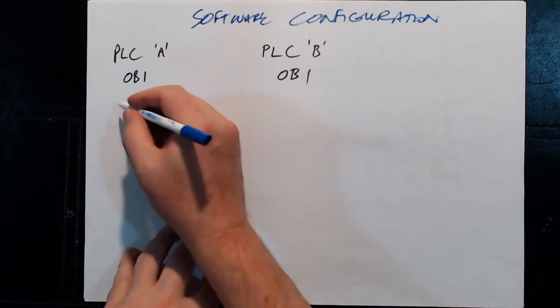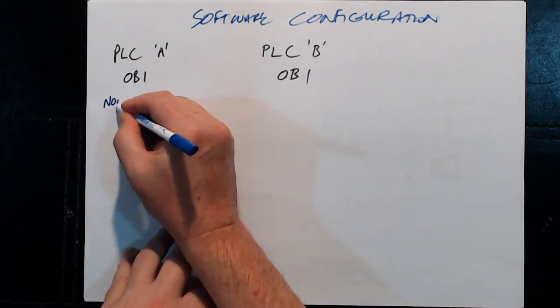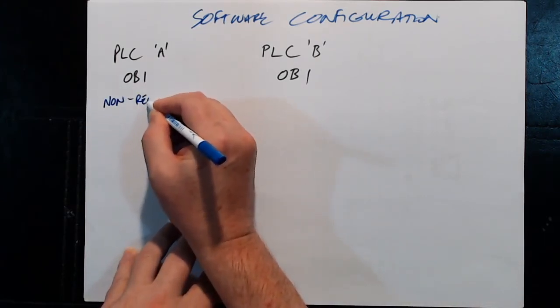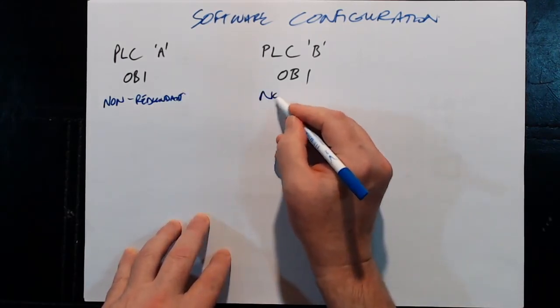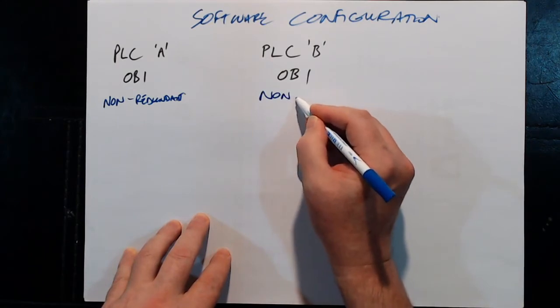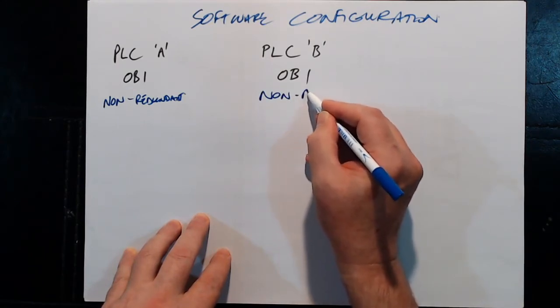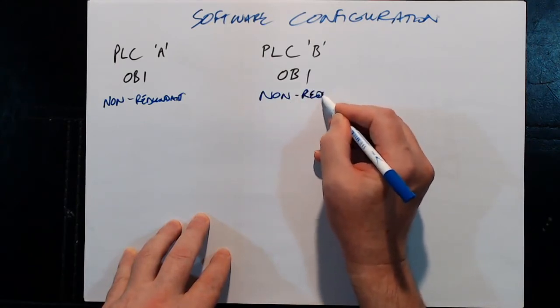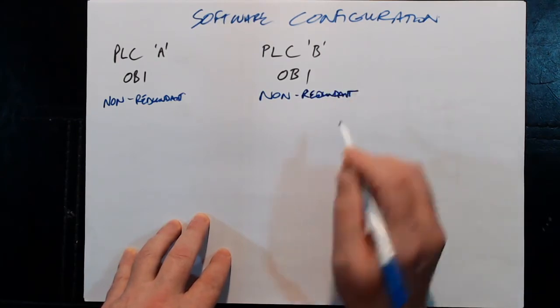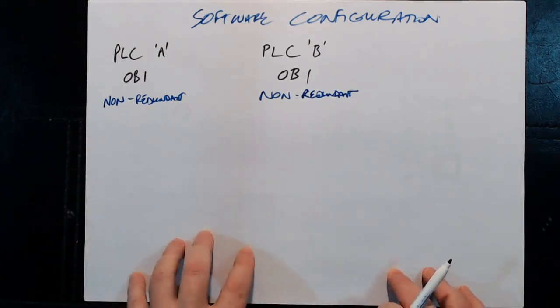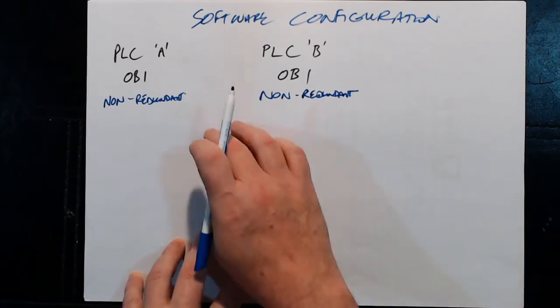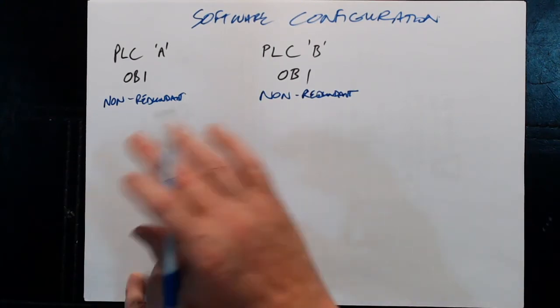Alright, so let's take a look here. In both of these there's some non-redundant program, and the same in the other PLCs as well. It doesn't have to be there, but if it's there you use it. And they take care of their own housekeeping and whatever. So each of these non-redundant sections of the program will be specific to that PLC. But there's a section of the program that must be identical to both.